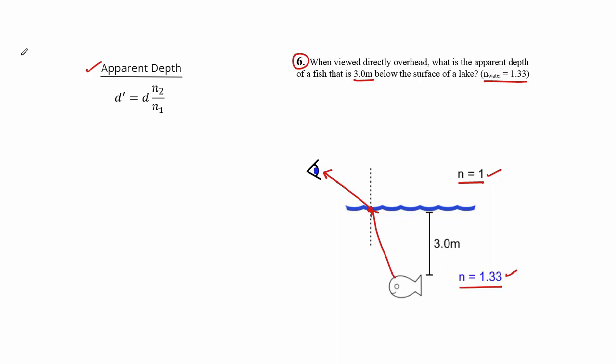Now if we backtrack here, the observer follows that light back, and it appears as if that light was coming from right here. So it appears that that fish is actually at a different depth than it really is, in this case shallower than it really is.